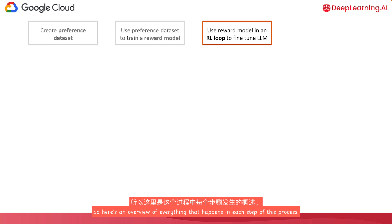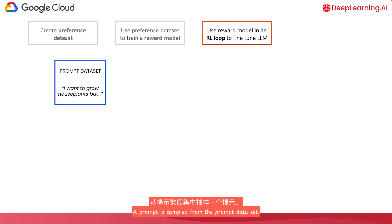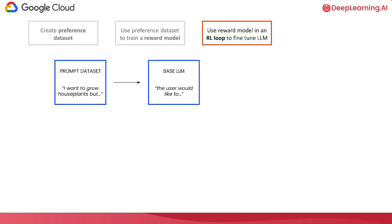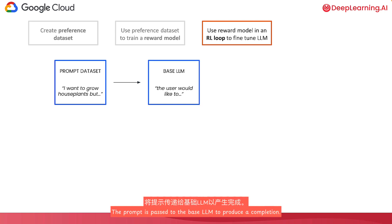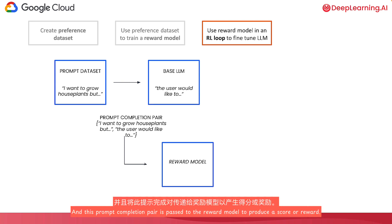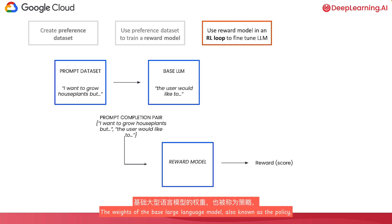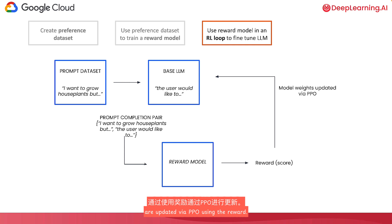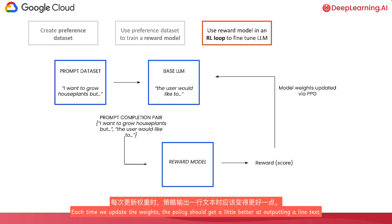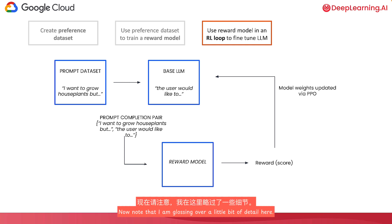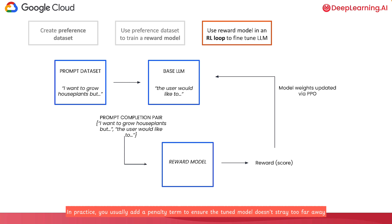Here's an overview of everything that happens in each step of this process. A prompt is sampled from the prompt dataset. The prompt is passed to the base large language model to produce a completion. This prompt-completion pair is passed to the reward model to produce a score or reward. The weights of the base large language model — also known as the policy — are updated via PPO using the reward. Each time we update the weights, the policy should get a little better at outputting aligned text. In practice, you usually add a penalty term to ensure the tuned model doesn't stray too far from the base model, but we'll talk more about that in a future lesson.